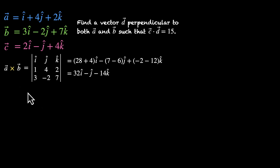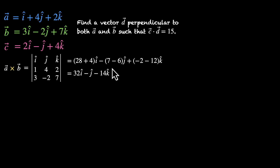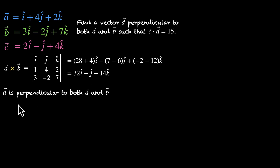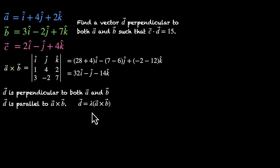This vector is perpendicular to both a and b. Since d must also be perpendicular to both a and b, d must be parallel to a cross b. So we can write d as lambda times a cross b, where we don't yet know the value of lambda. Both vectors are parallel or collinear.